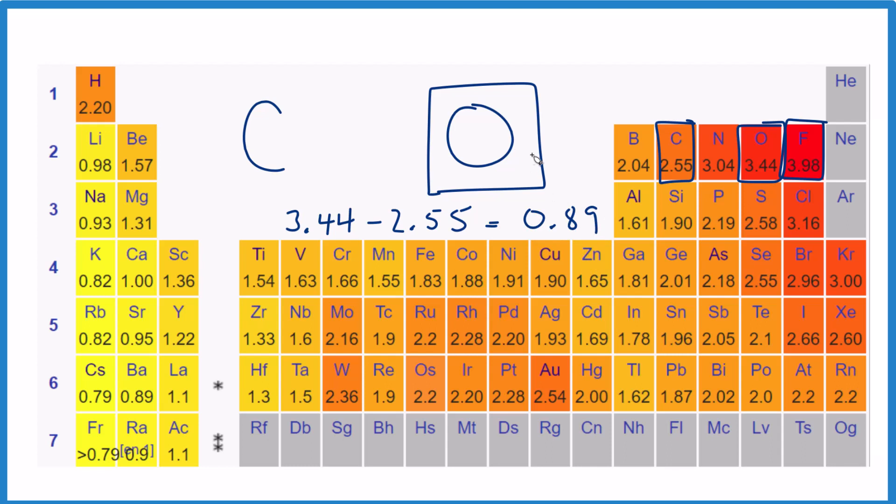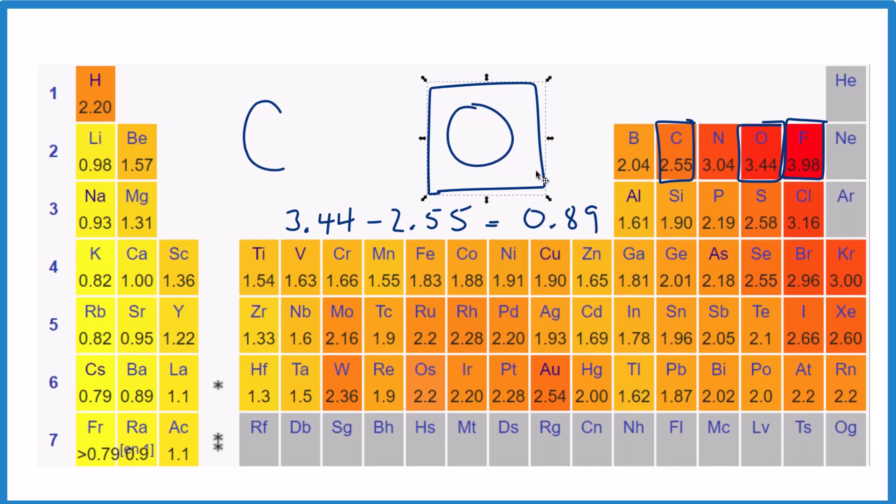What that means is when we have carbon and oxygen, when they form a chemical bond, it's considered to be a covalent bond. This is less than 2.0. So when we have this value for electronegativity difference less than 2.0, this is going to be a covalent bond and the electrons are going to be shared between the carbon and the oxygen. So that's it.